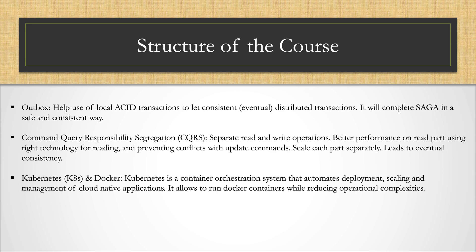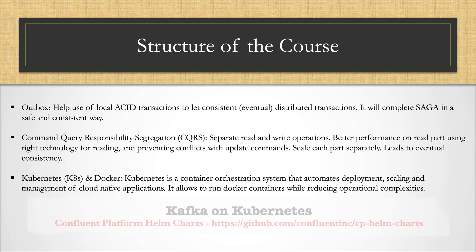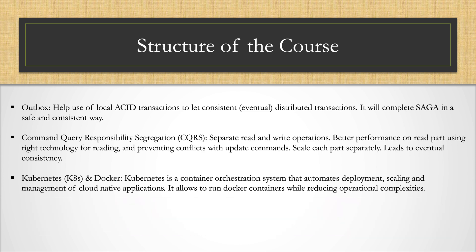Kubernetes and Docker. Kubernetes is a container orchestration system that automates deployment, scaling, and management of cloud-native applications. It allows running Docker containers while reducing operational complexities. You will learn to containerize your services and first run them locally using Docker. Then you will create a local Kubernetes cluster and put your Docker containers in this local cluster, creating deployments and services for each microservice. To run Kafka in Kubernetes, you will use CP Helm charts, and for microservices you will create Docker images locally.